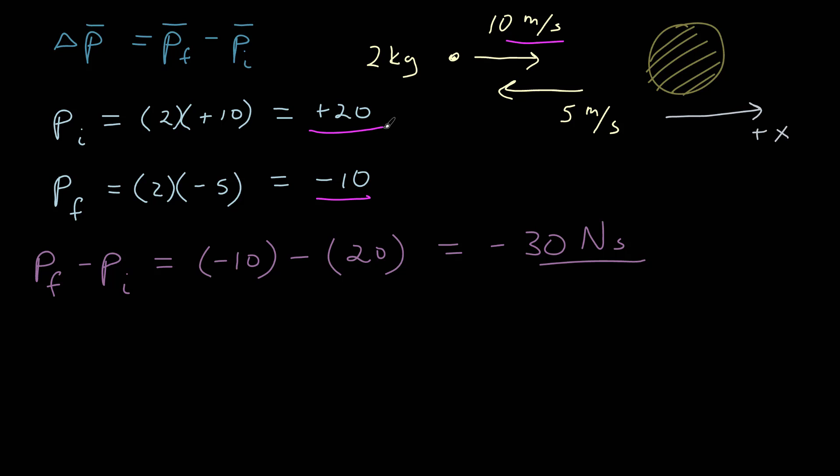The first time a student sees this, they want to think the change in momentum is down by a factor of two — that it went from ten to five. But no, the change in momentum is large and negative because the sign changed.